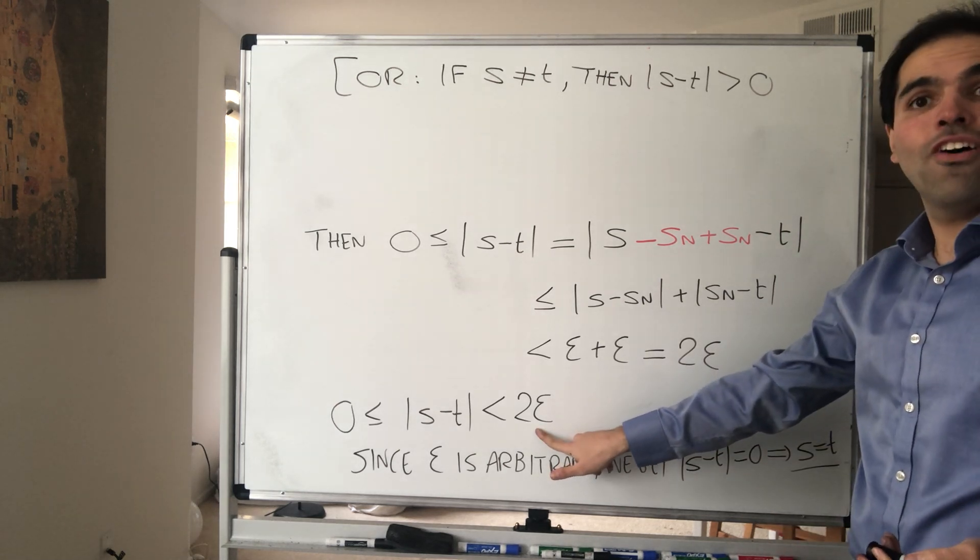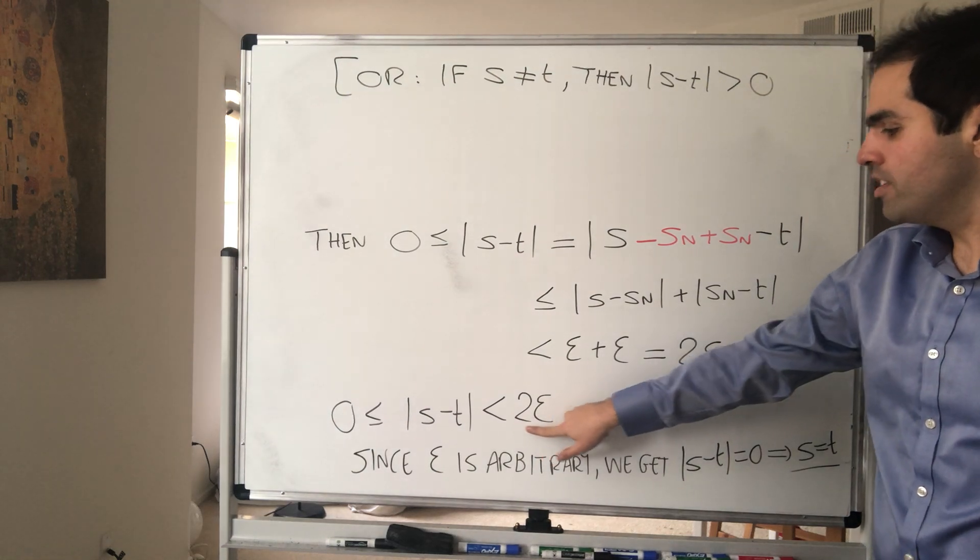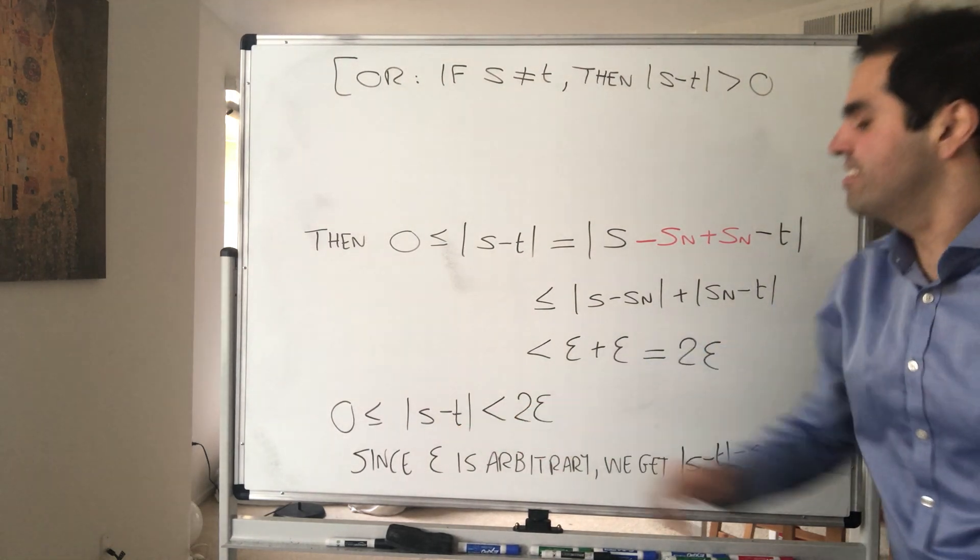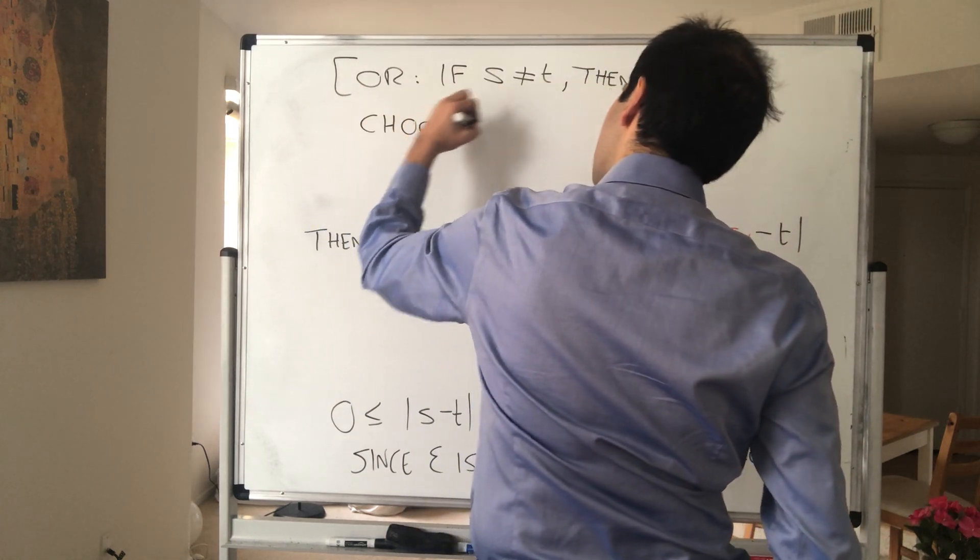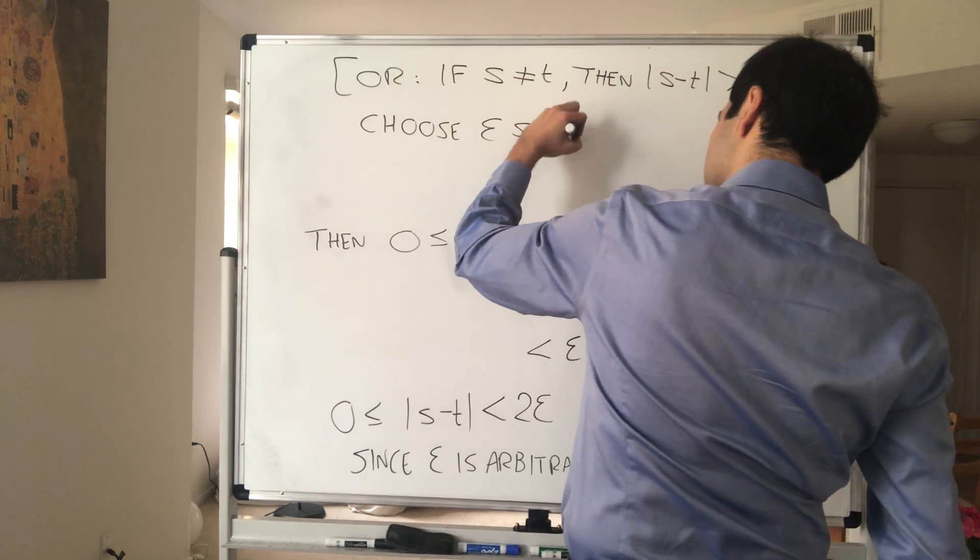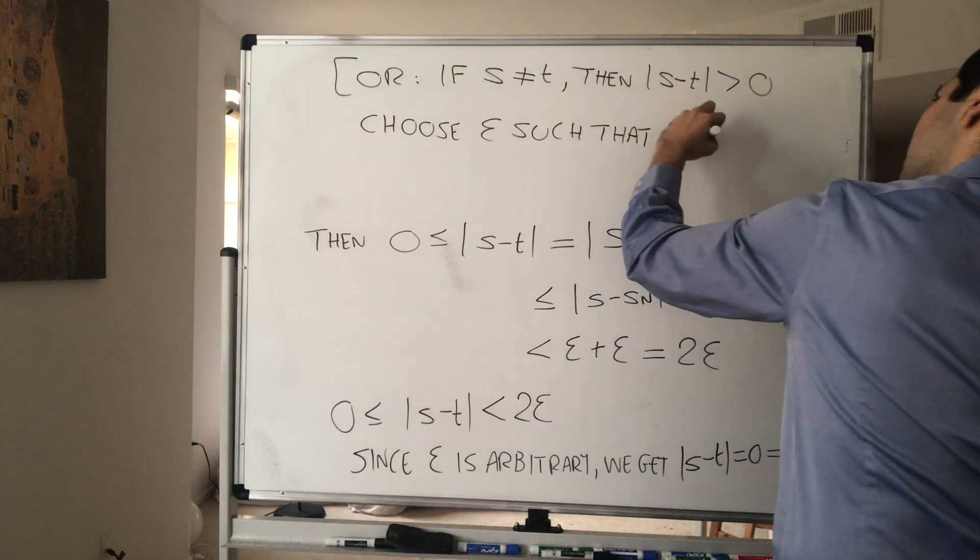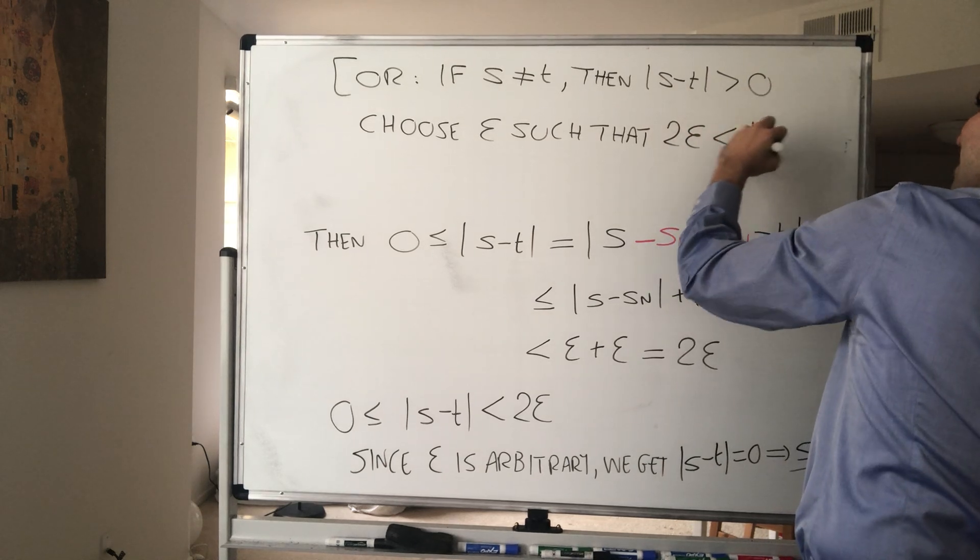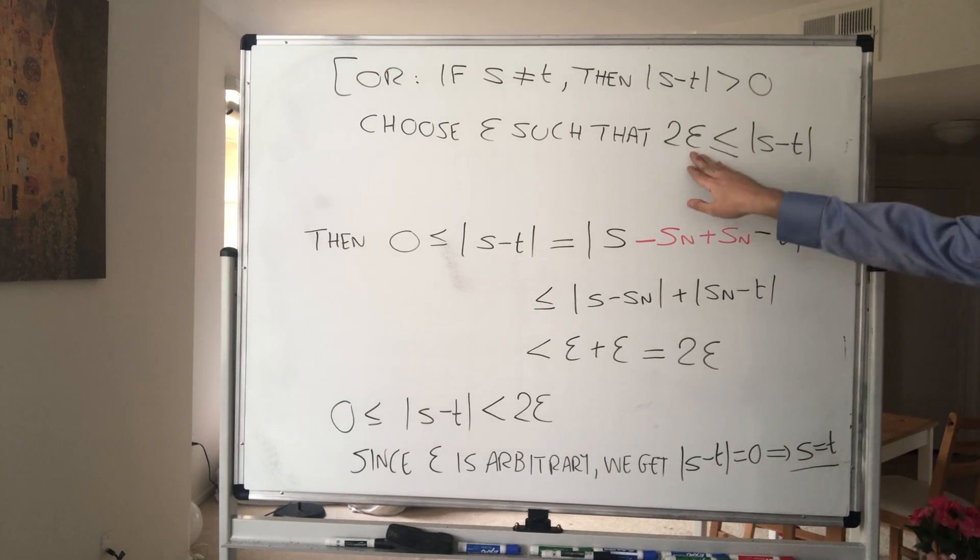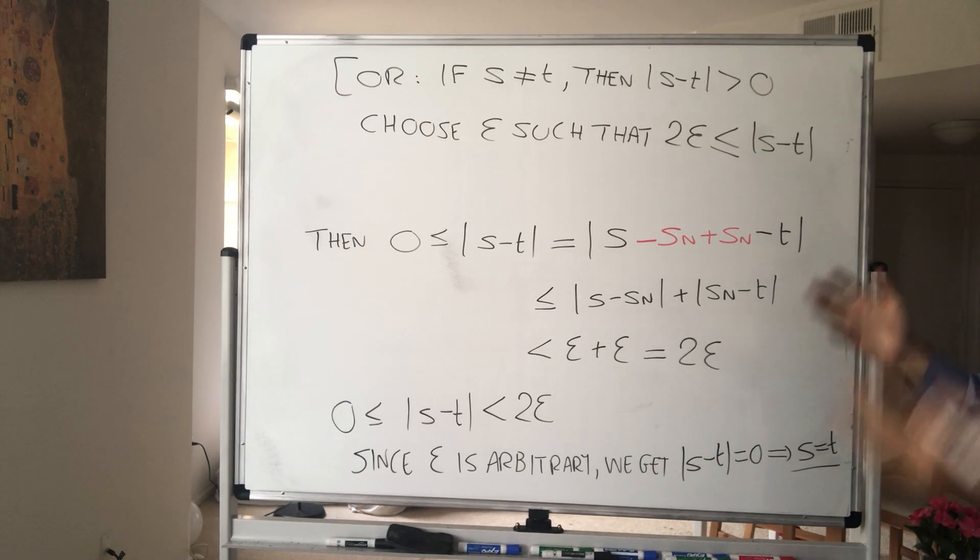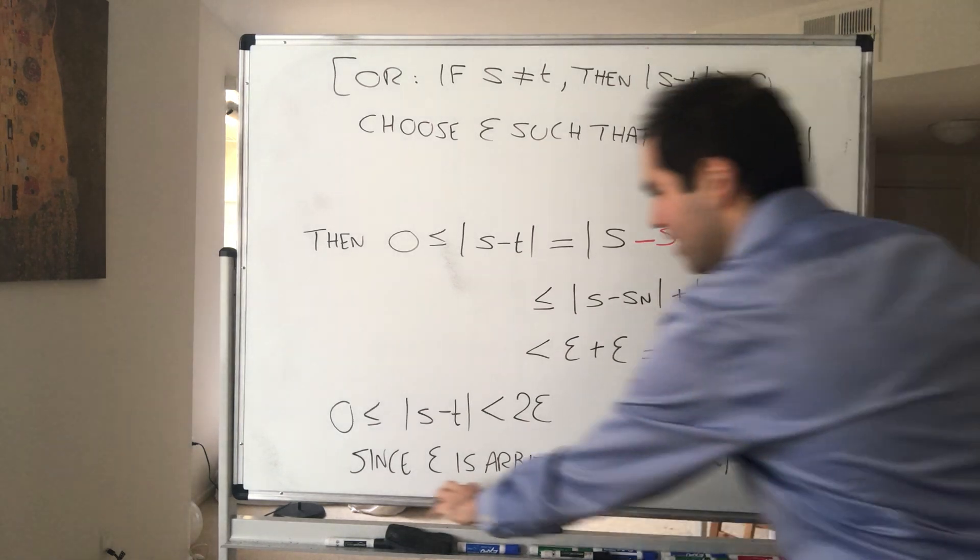this is true for Epsilon. In particular, choose Epsilon such that this is less than this number. Now choose such that 2 Epsilon is less than S minus T. Or even less than or equal, it's fine. So for instance, Epsilon is this number over 2 works, absolute value of S minus T over 2.